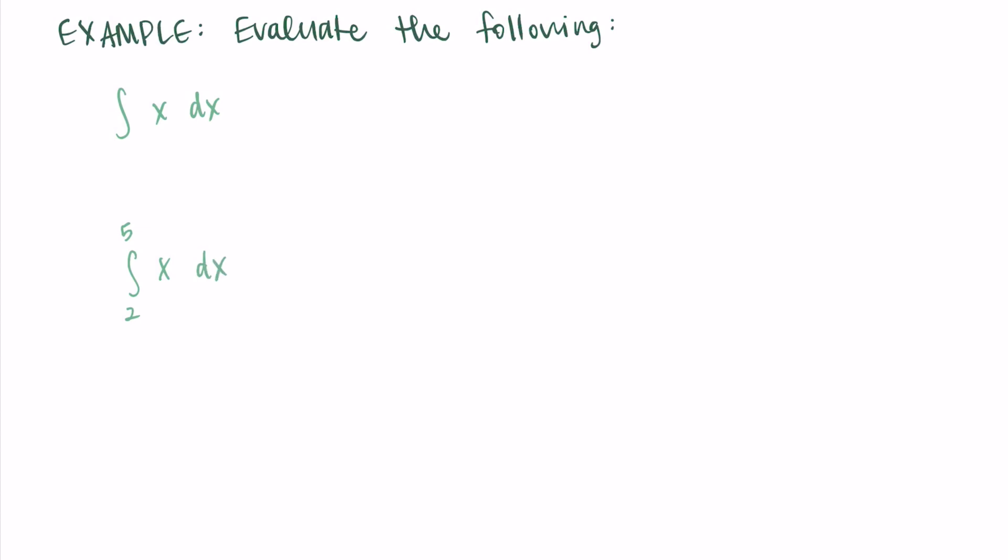So for the indefinite integral, we're just looking for an antiderivative. So the antiderivative of x is 1/2 x squared, and we're going to add that plus c at the end to represent any antiderivative. And remember, that plus c is there because the derivative of a constant, plus c, is always 0. So there could be any constant there.